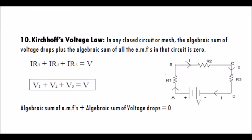Kirchhoff's voltage law: in any closed circuit or mesh, the algebraic sum of voltage drops plus the algebraic sum of all the EMFs in that circuit is zero. That is, V1 plus V2 plus V3 equals V, and the algebraic sum of EMFs plus the algebraic sum of voltage drops equals zero.